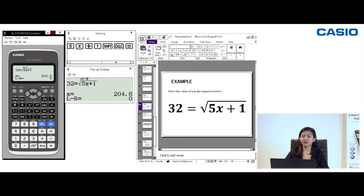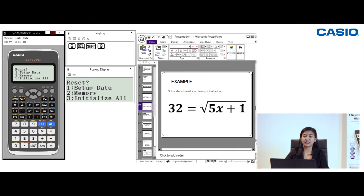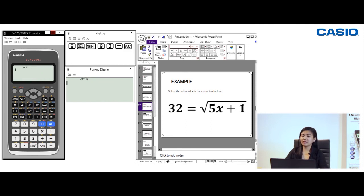So you have observed that there is a value which is 87, which was our previous answer in the first equation. So what we will do is simply reset the data. So let's press shift and then reset by pressing 9, and then press 3 to reset the data. So press equal sign and then press AC, so that later on our next example we can easily check the value of x.